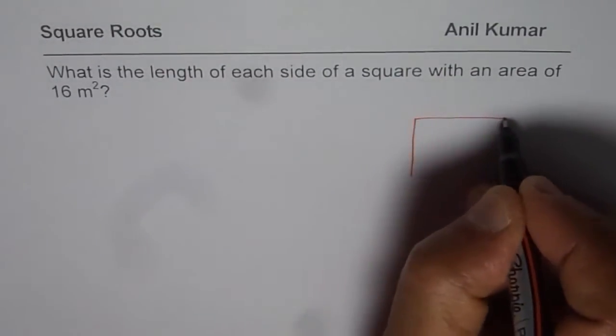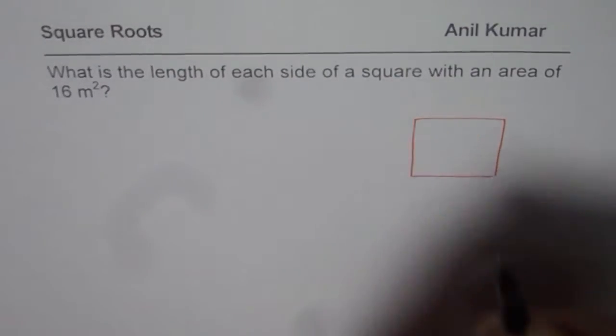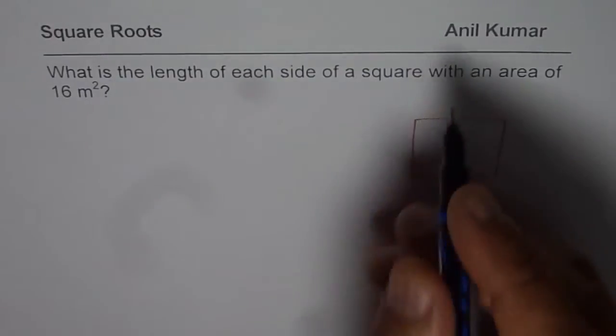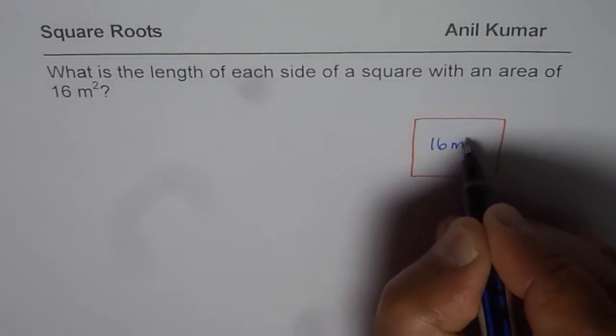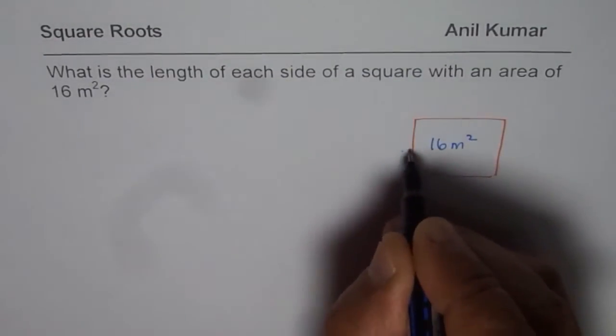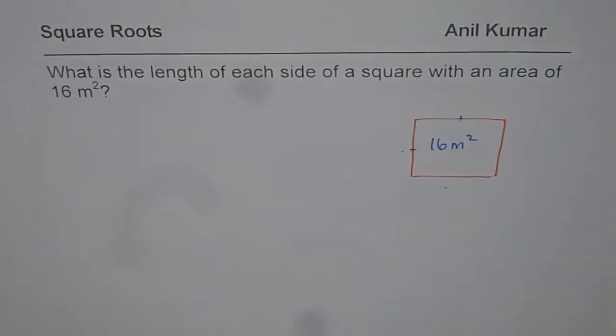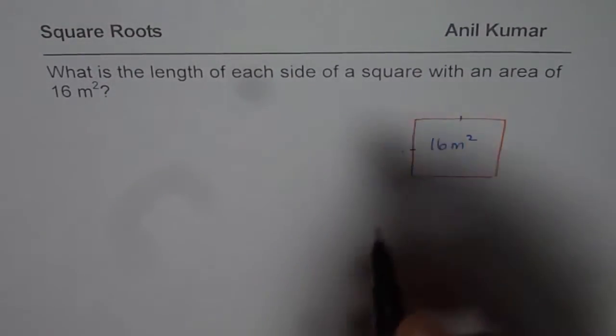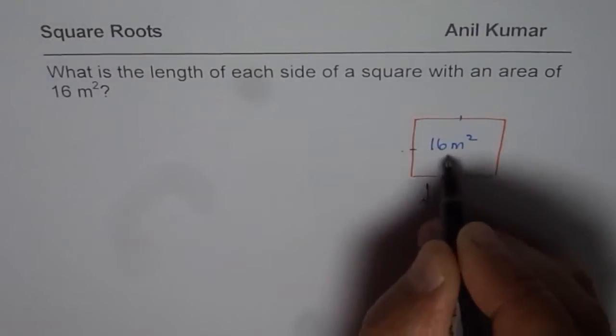We are given a square whose area is 16 meters square. You need to find each length. All lengths are equal, so as you know, length of each side is square root of the area.